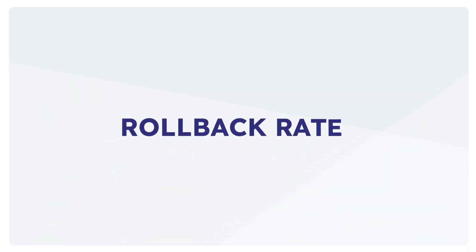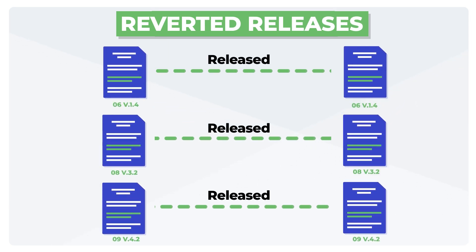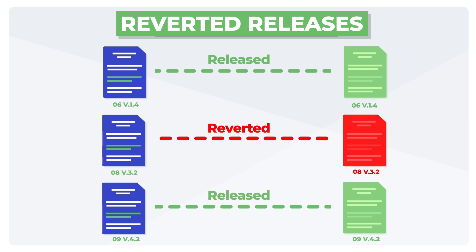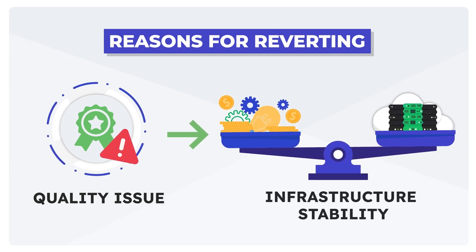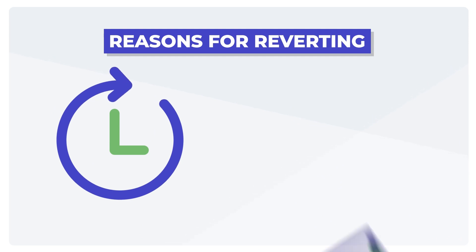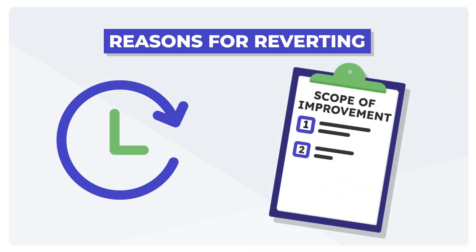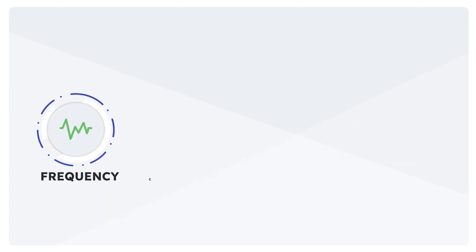Rollback rate is another measurement for the quality of release delivery. It counts the number of releases that had to be reverted — the underlying reason could be anything ranging from quality issues to infrastructure stability. The higher the release rollback rate, the more scope for improvement in your release management processes.